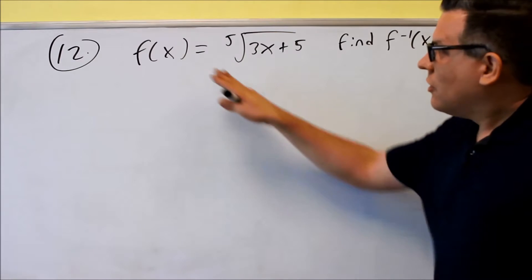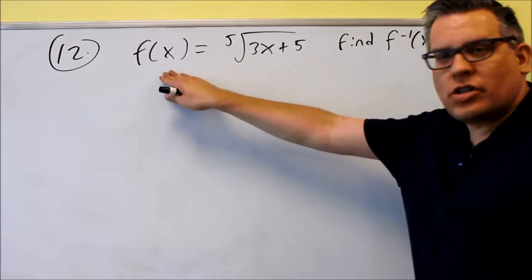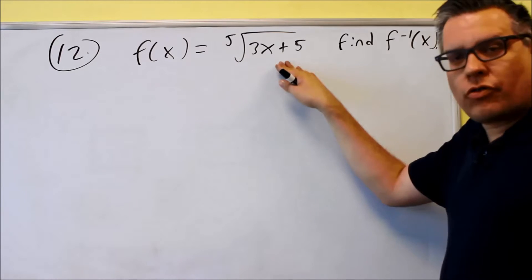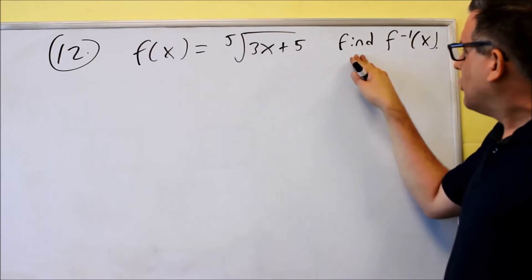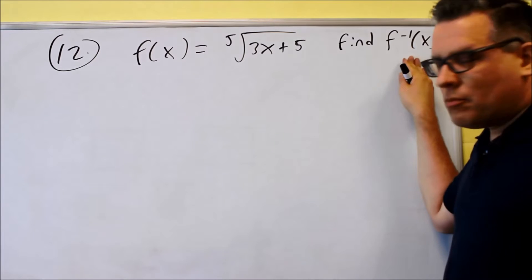Alright, so now for number 12, we're given the original function f(x), fifth root of 3x plus 5. We're told to find the inverse of that.